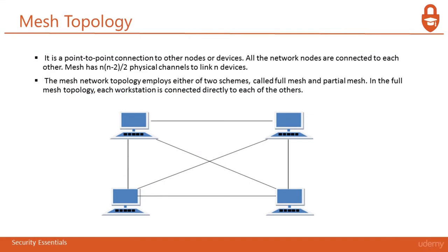Next is the Mesh topology — a point-to-point connection to other nodes or devices. System A is connected to Systems B, C, and D simultaneously, so all systems are connected with each other point-to-point. The Mesh network topology employs two schemes: full mesh, where each workstation is connected directly to each other, and partial mesh, where connections are created according to specific requirements. If there is no need for System B to be connected to System D, that line can be disconnected, creating a partial mesh.